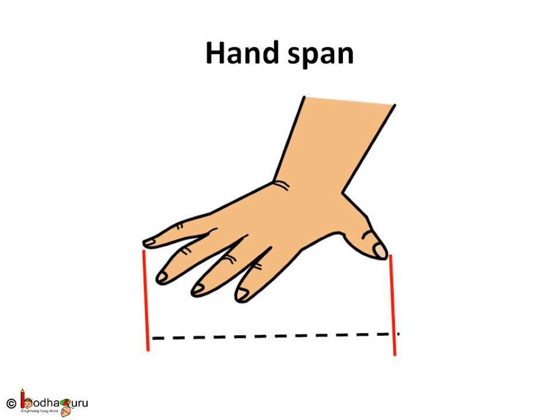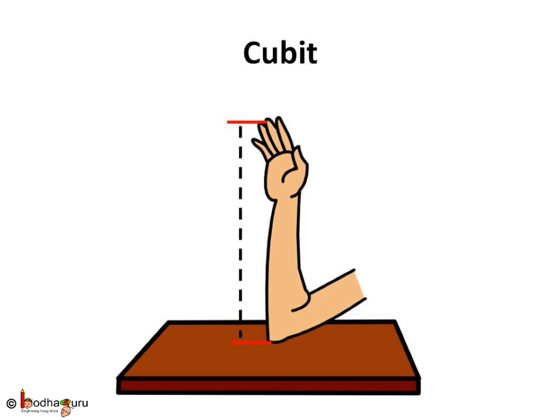Today, the standard unit of length is meter. But at one time, there were no such standard units. People measured length using the distance between the tip of the thumb and the tip of the little finger of a fully stretched hand. This unit is called hand span. In another method, people used to take the distance between the tip of the middle finger and the elbow as a unit. This unit is called cubit.